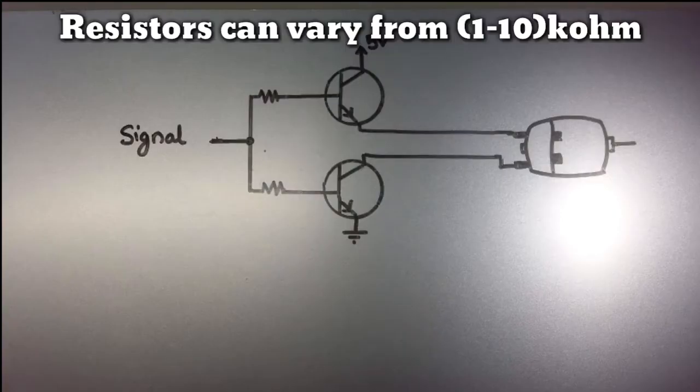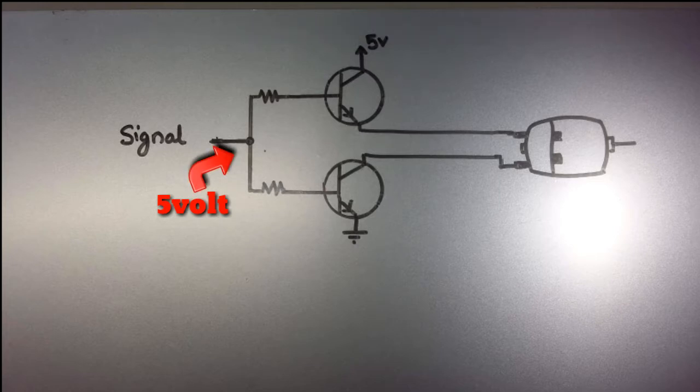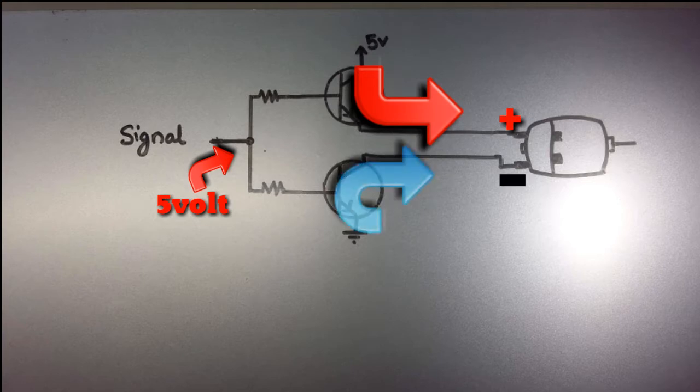So with a pair of transistors in this constellation, whenever voltage is provided to the base of the transistors, the motor receives positive supply from the first transistor and ground from the second transistor. This way the motor rotates in one direction.